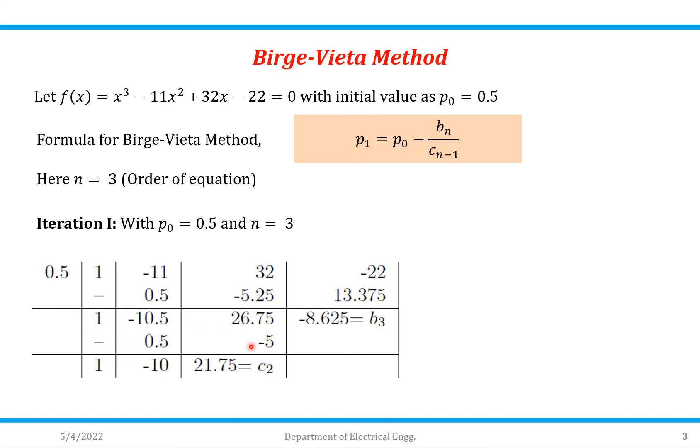-10 × 0.5 is -5. Add these two, so you will get 21.75. As in the formula it is p₁ = p₀ - bₙ/(cₙ₋₁), that is why here we have calculated up to this step only, not further.